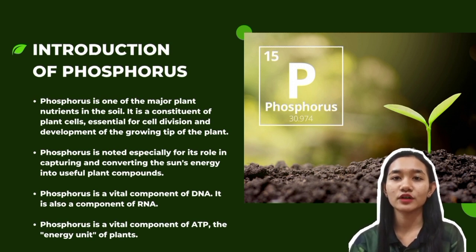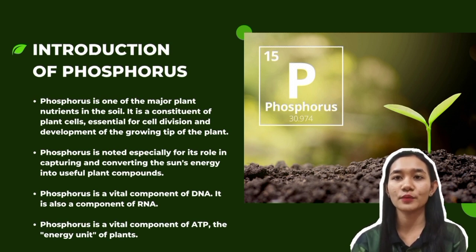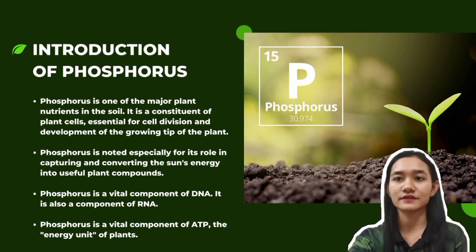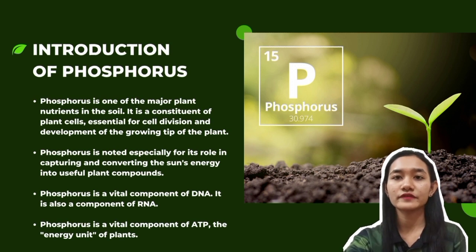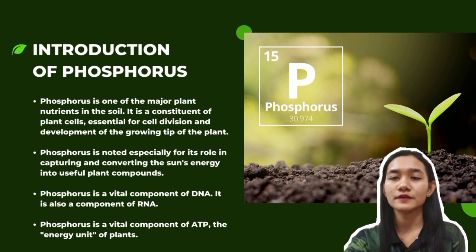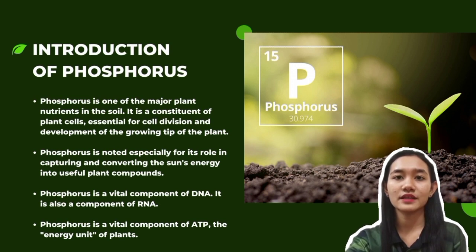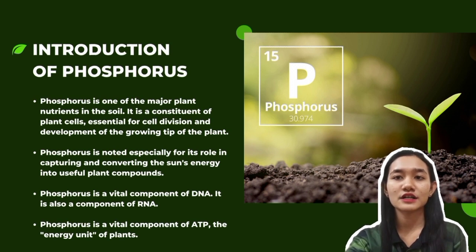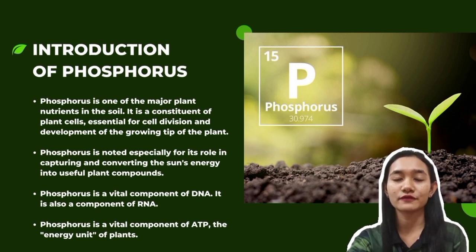It is also a component of RNA, the component that reads the DNA genetic code to build proteins and other compounds essential for plant structure, seed yield and genetic transfer. The structure of both DNA and RNA are linked together by phosphorus bonds. Phosphorus is a vital component of ATP, the energy unit of plants. ATP forms during photosynthesis and phosphorus is present in its structure from the beginning of seedling growth through to the formation of grain and maturity.